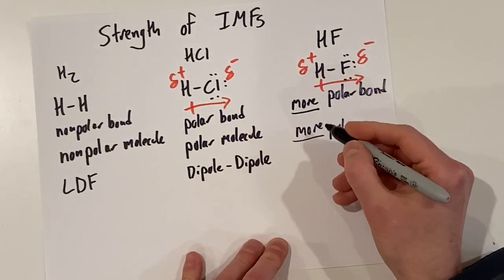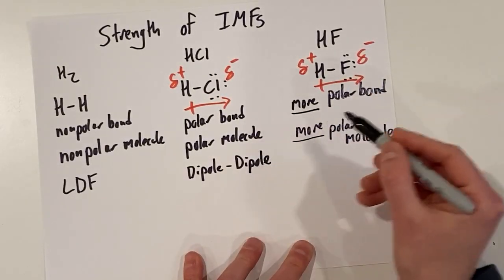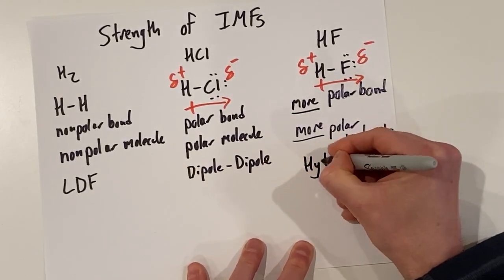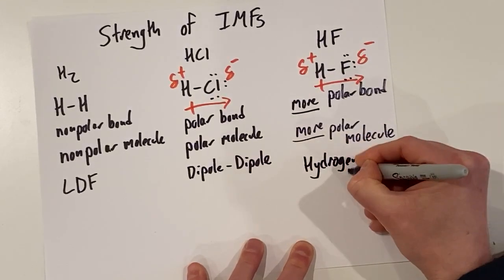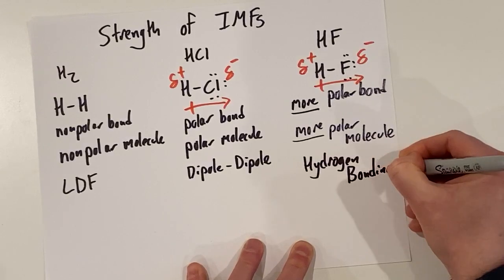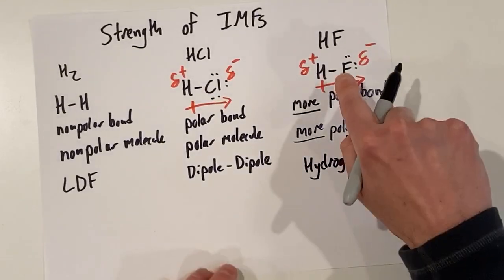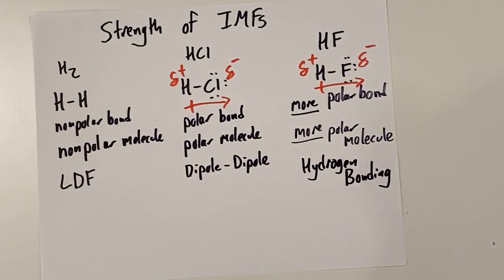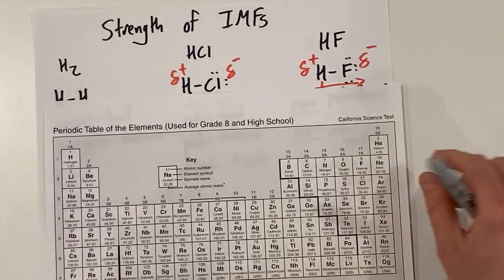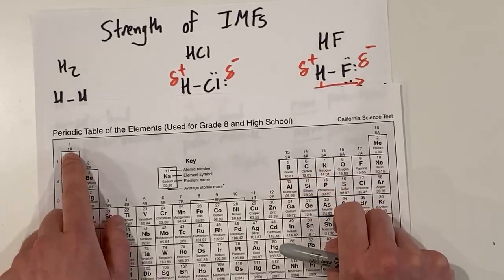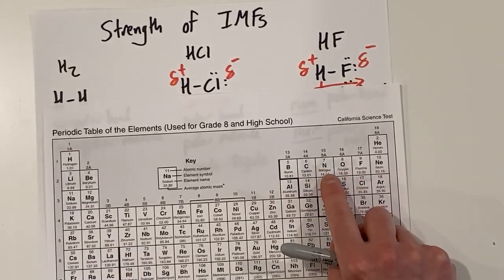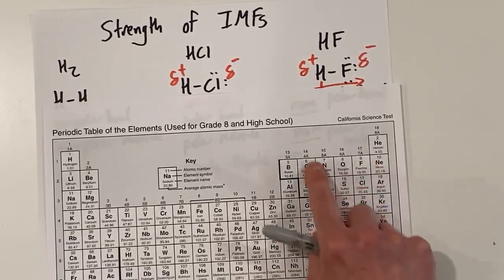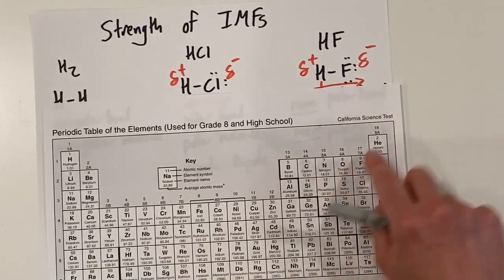HF experiences a kind of dipole-dipole force, but the strongest kind, called hydrogen bonding. Hydrogen bonding occurs when a hydrogen bonds with fluorine, oxygen, or nitrogen — the most electronegative elements. When that happens, we get the most polar bonds, which creates the strongest attraction between molecules.